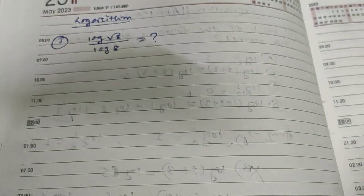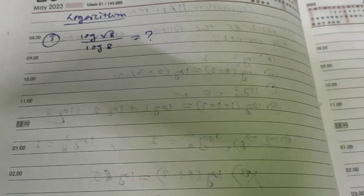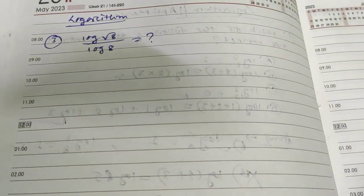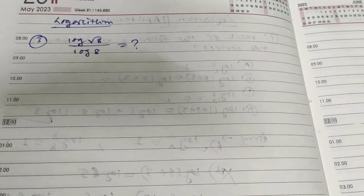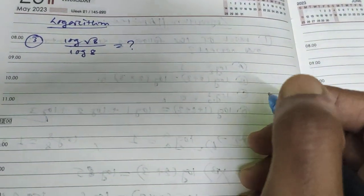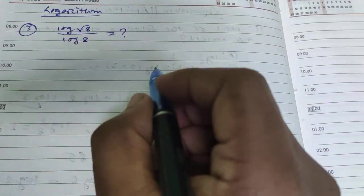Hi everyone, welcome to Aptimaster. This is the third question of our logarithm playlist. The question is: calculate the value of log root 8 divided by log 8.